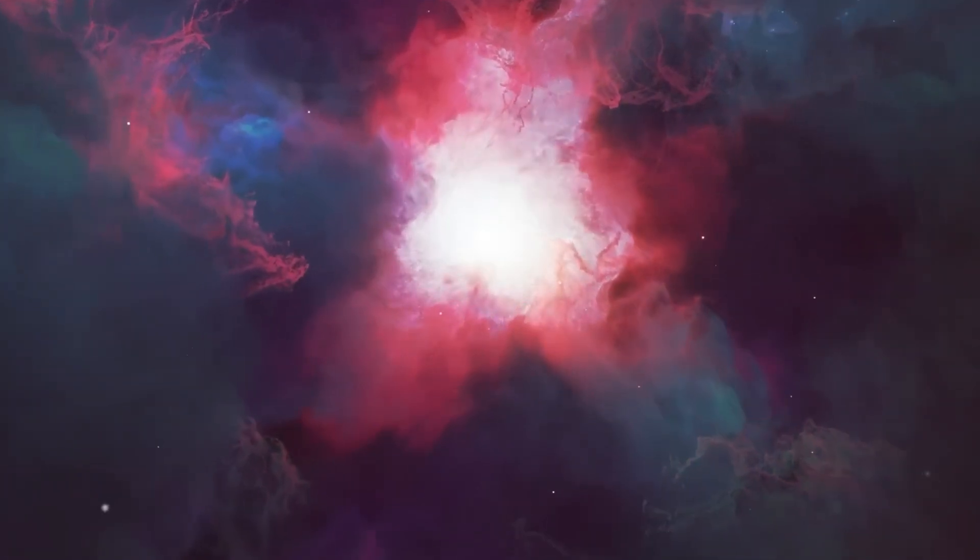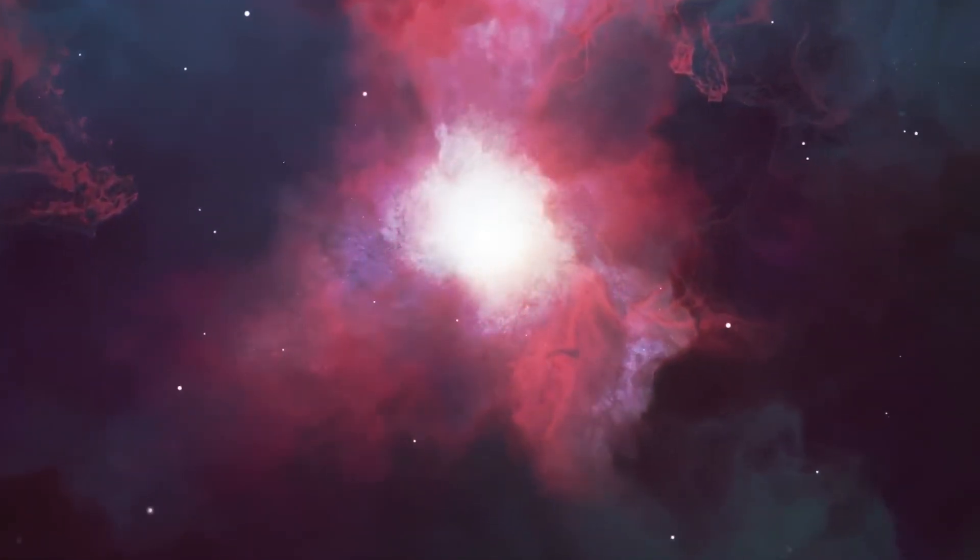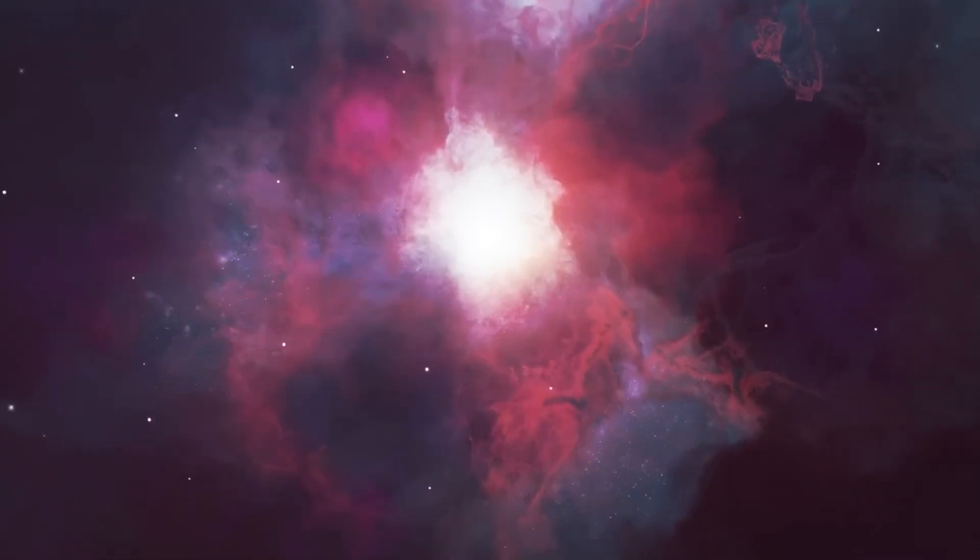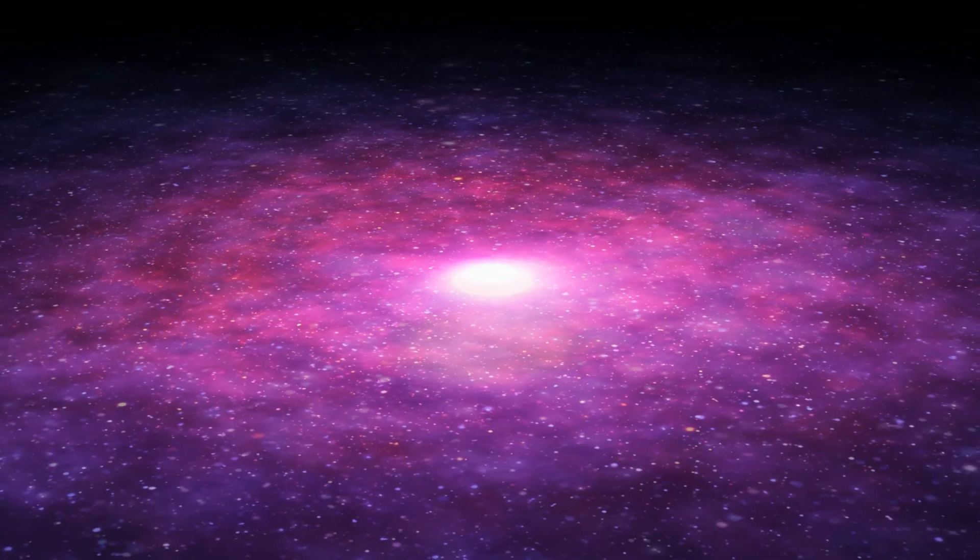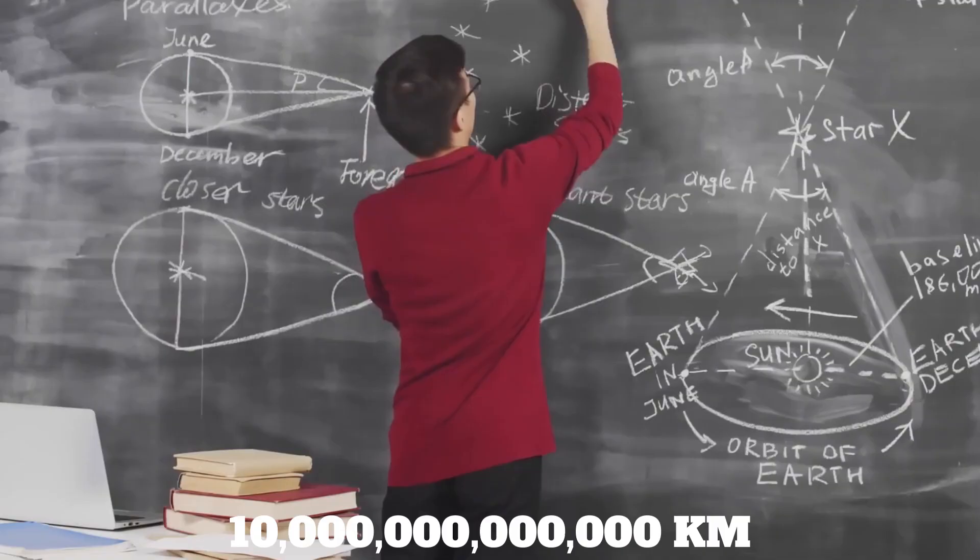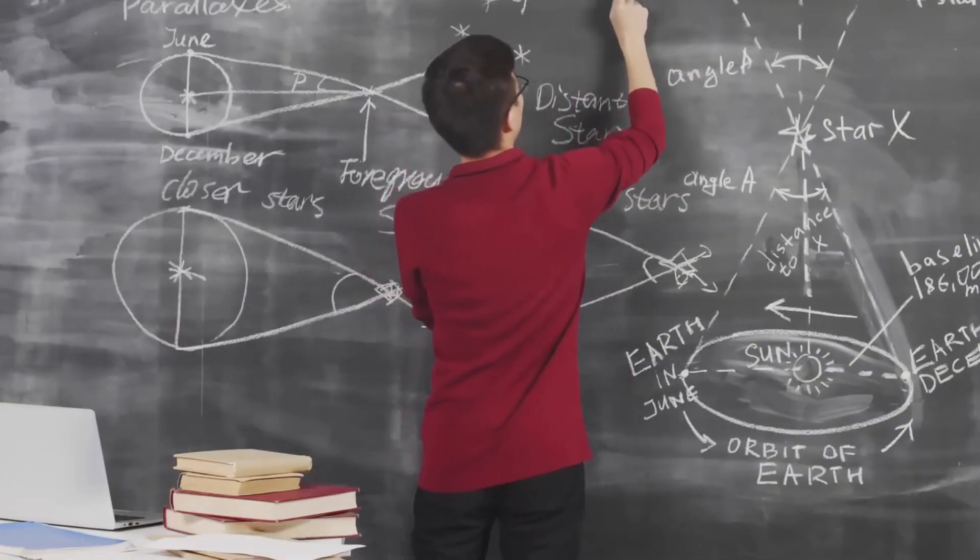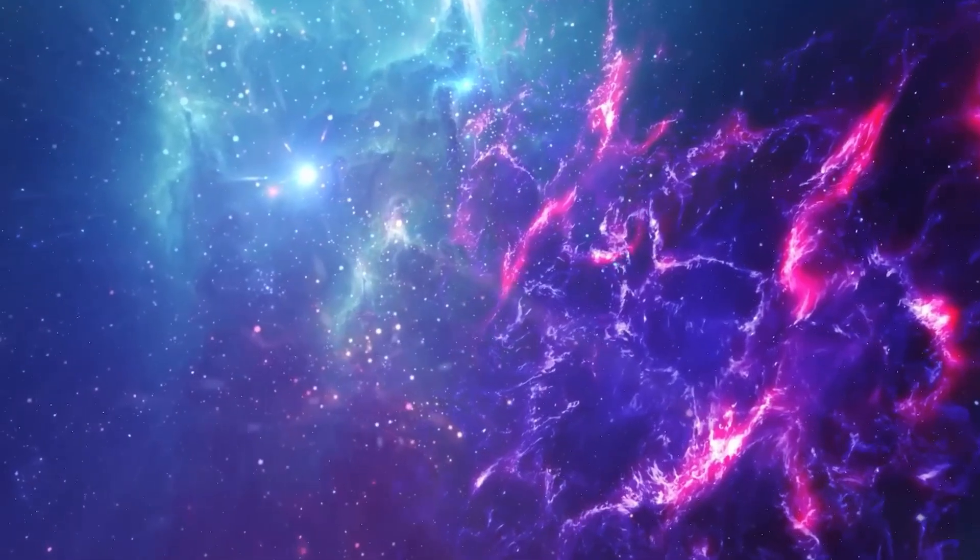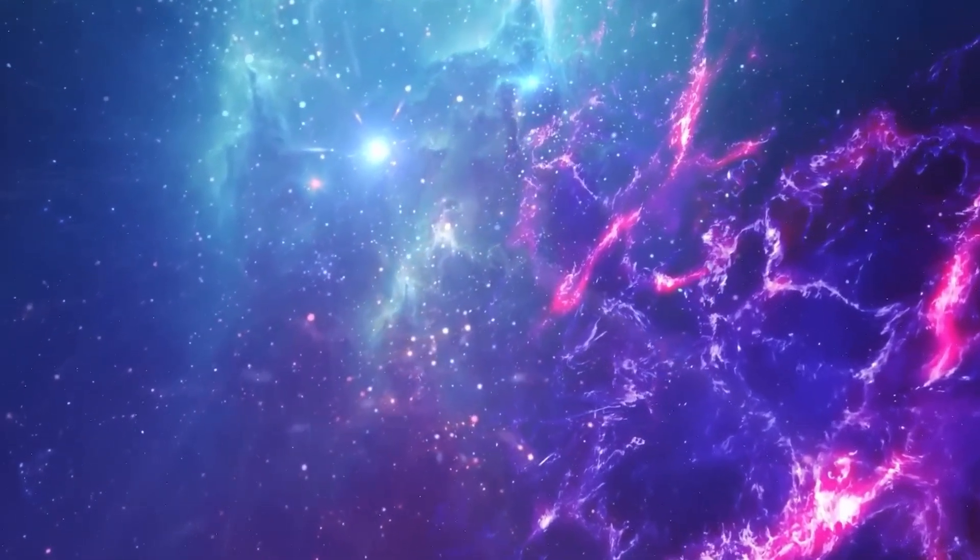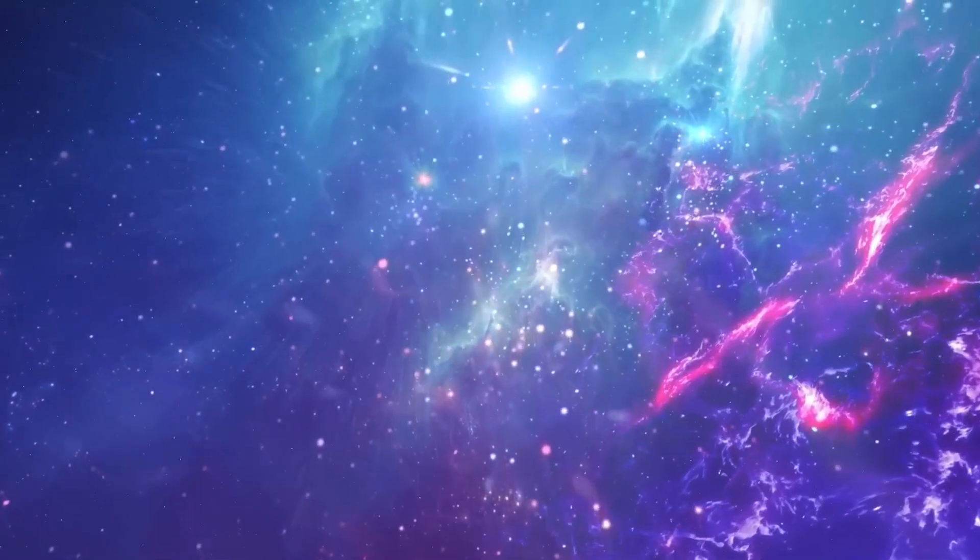Another unit of measurement that involves light is a light year, which is the distance light can travel in one year. This distance is about 10 trillion kilometers and is a method astronomers and physicists use to measure vast distances across the universe. The universe is so vast that it can take thousands of years for light to travel from one part to another.